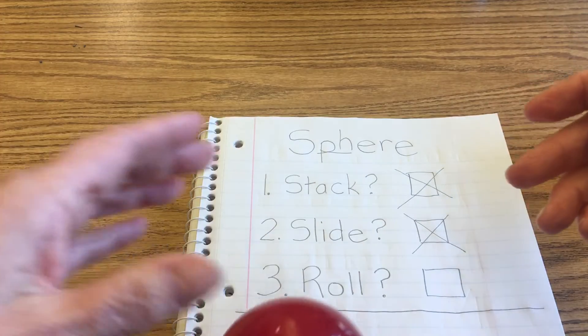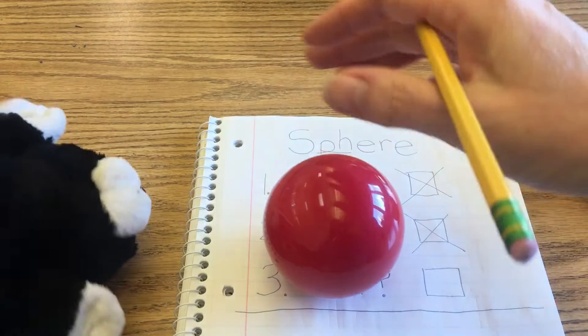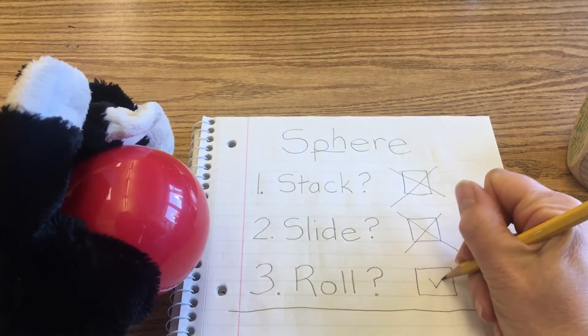Does not slide. Does it roll? Oh, yeah. These are really good. I mean, that's why balls are shaped like a sphere, right? For any of the baseballs, the soccer balls, basketballs. So that would be a yes. So we get to put a check mark in there.